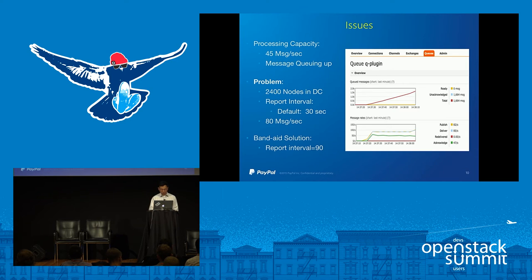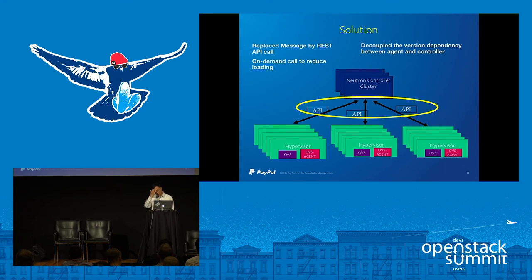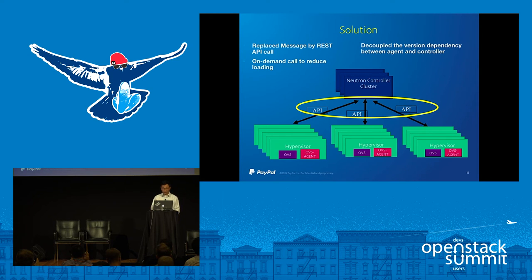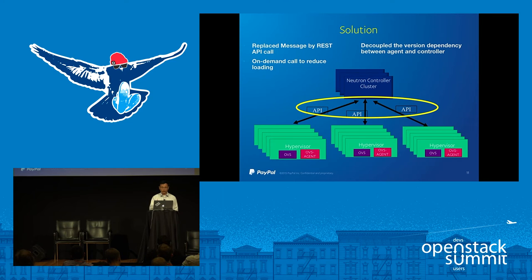The immediate band-aid solution is to tune the state report interval to 90 seconds, which reduces the messaging rate. However, we are thinking from a different angle. Each time you have a component in your deployment, you have to put a lot of maintenance on top of it, make sure the service is running smoothly, and monitor a lot of that work. So instead of directly fixing the messaging rate issue, we asked: why can't we just replace the message queue with a standard REST API call?